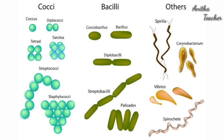Firstly, the spherical type of bacteria. Bacteria may occur individually or in groups. The arrangement depends upon the adherence of cells together after cell division. Based on the number of cells adhering together and their arrangement, the spherical (coccal) forms are named as follows: Monococcus means a single spherical bacterium. Diplococcus refers to two spherical bacteria paired together. Tetracoccus refers to four spherical shaped bacteria grouped together.